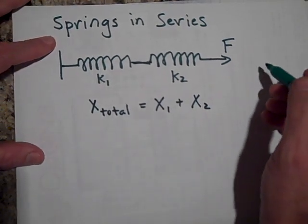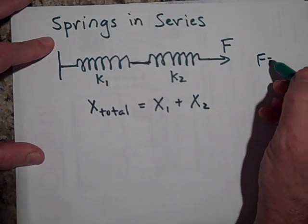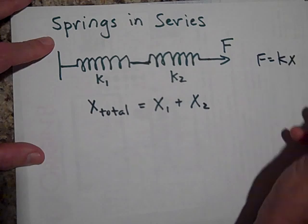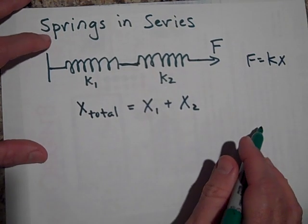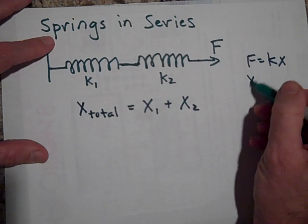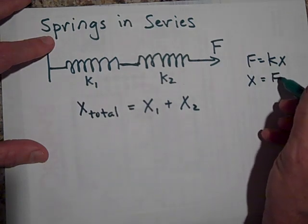Okay, now if we use Hooke's law, F equals KX, we'll ignore the negative for a little bit here. Then X is equal to F over K.